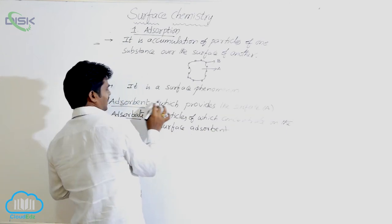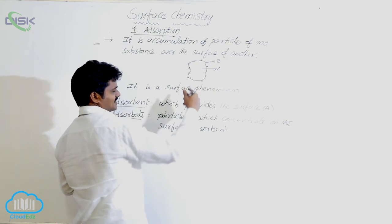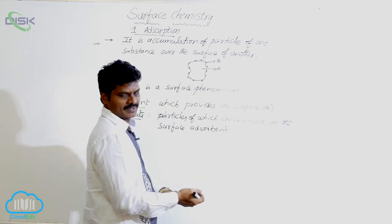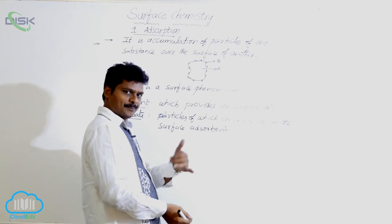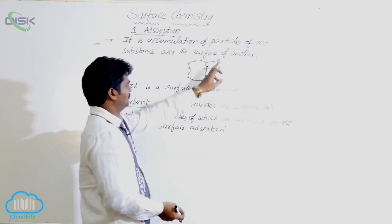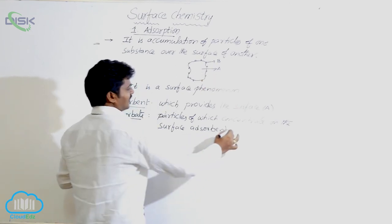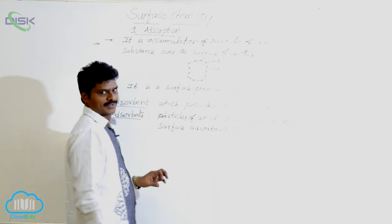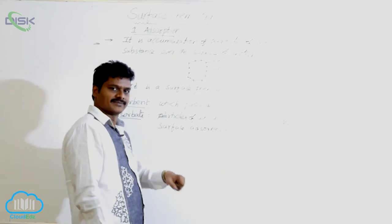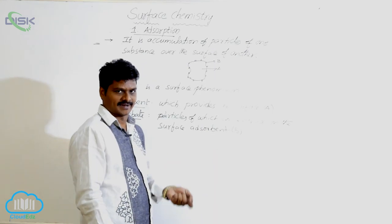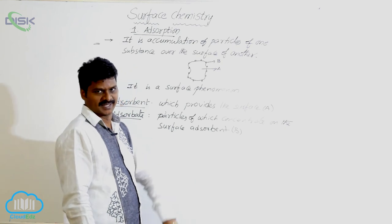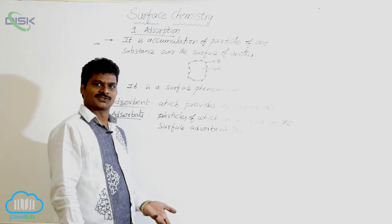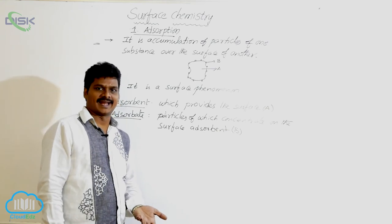A is the adsorbent because it is providing the surface for adsorption. B is the adsorbate because its molecules are reaching on the surface of the adsorbent. In that way, we can define adsorbent and adsorbate. Let us see some examples for adsorbent and adsorbate.